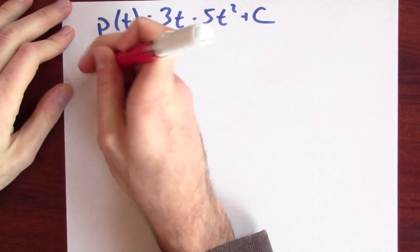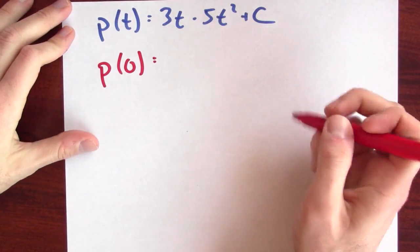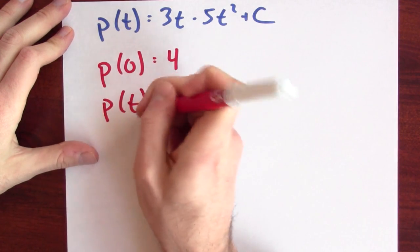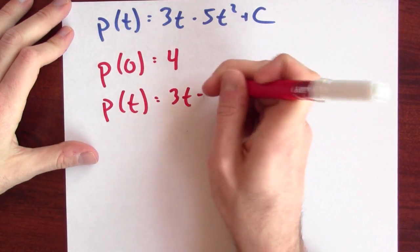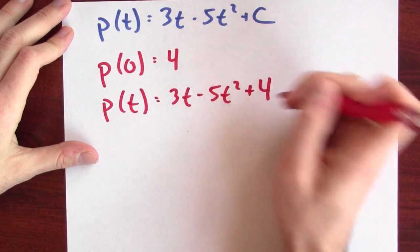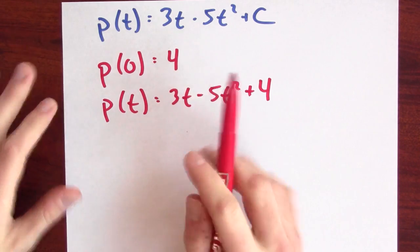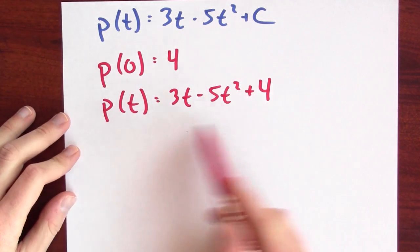That plus C has a perfectly reasonable physical interpretation. If I know my velocity, I know my position, as long as I know my initial position — as long as I know where I started. That's what the plus C is encoding. If I knew, for instance, that my position at time 0 were 4 units, then I could figure out what C would have to be. That would tell me that my position at some time t would be 3t minus 5t squared plus 4.